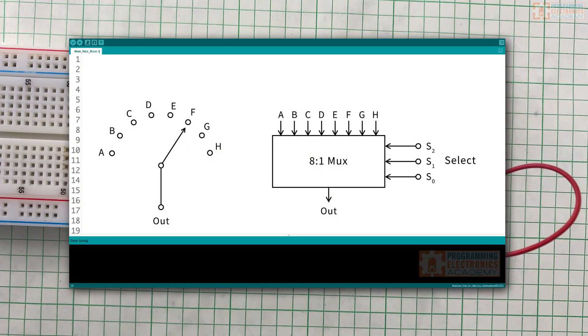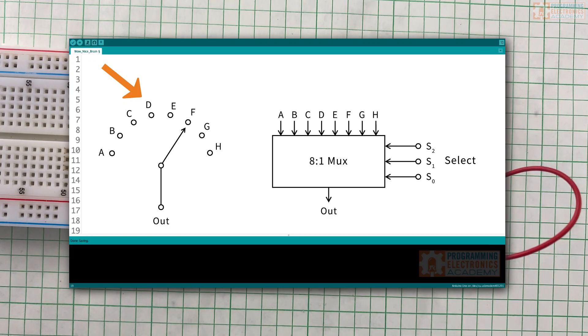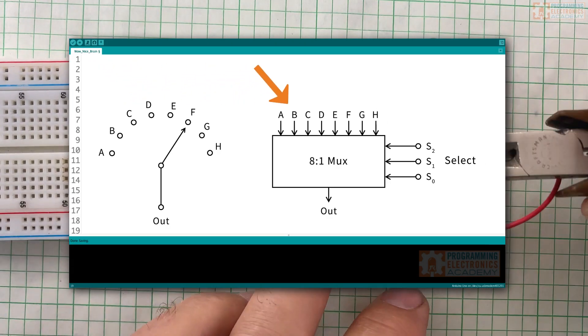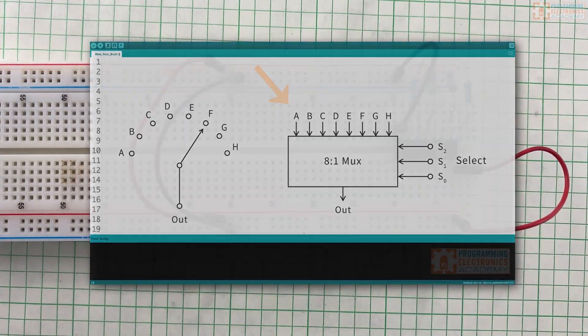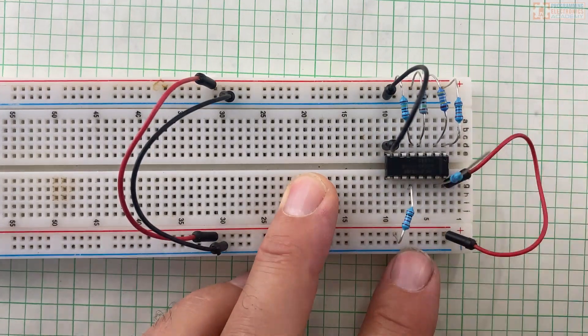Basically, a MUX allows you to select one of many different signals. Since this is an eight-channel MUX, we are able to choose between eight different signals. That's where those eight precision resistors come in. We attach different resistors to each channel of the MUX.